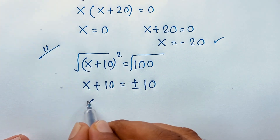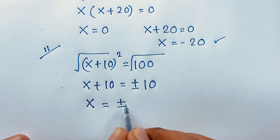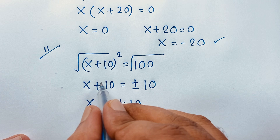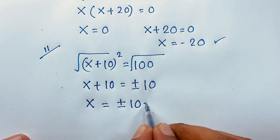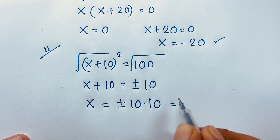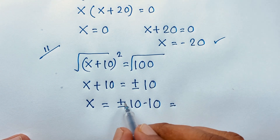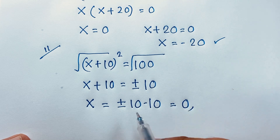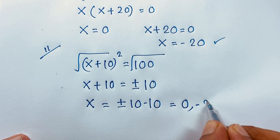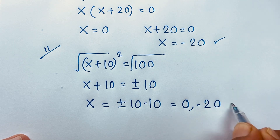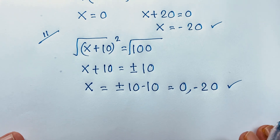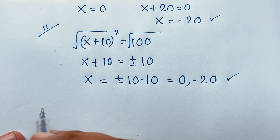So you can see that x + 10 = ±10, then x = ±10 − 10. If we take positive 10, moving it to this side gives −10, so +10 − 10 = 0. And −10 − 10 = −20. So we find x = 0 or x = −20.